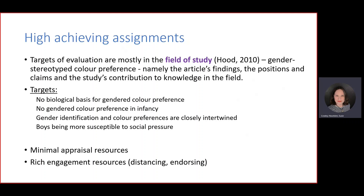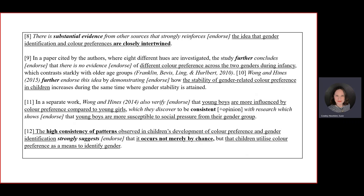High achievers might engage to disagree or to temper biological findings. They might develop the idea of gender identification being intertwined with colour preference. They might also jump from one of the discussion points, expand, and find additional sources. In this case there's minimal appraisal resources but very rich engagement resources — distancing and endorsing. You can see the type of language used is completely different.